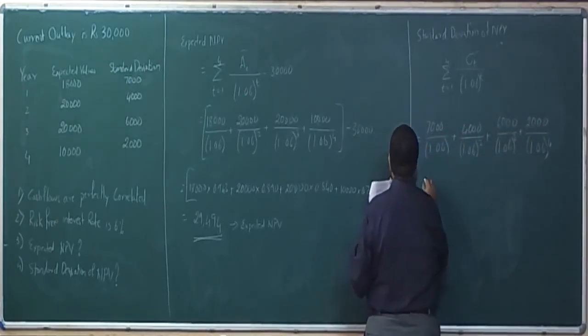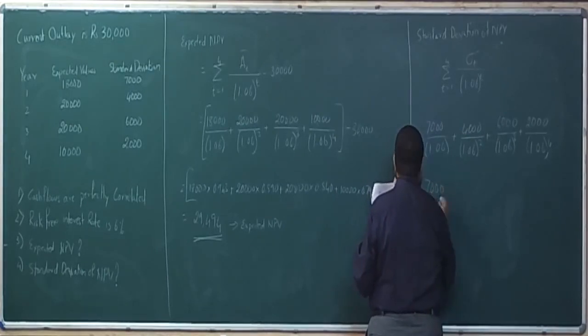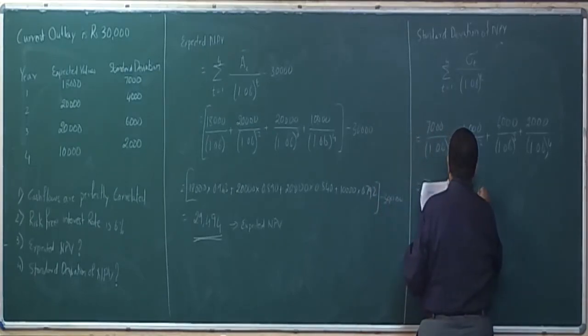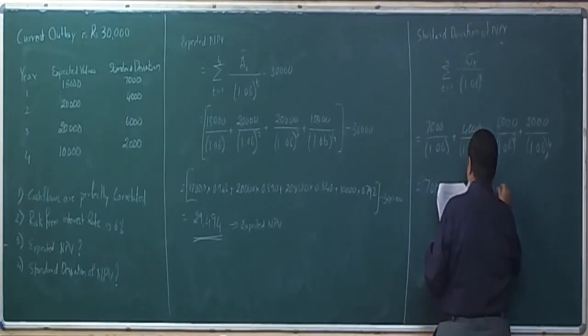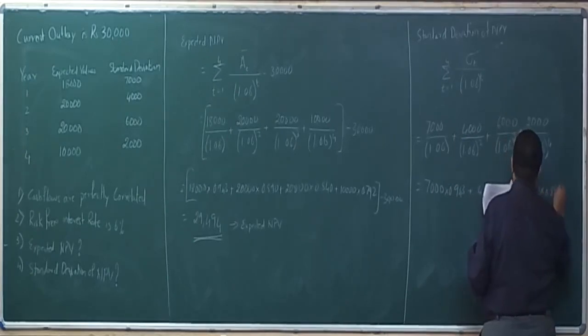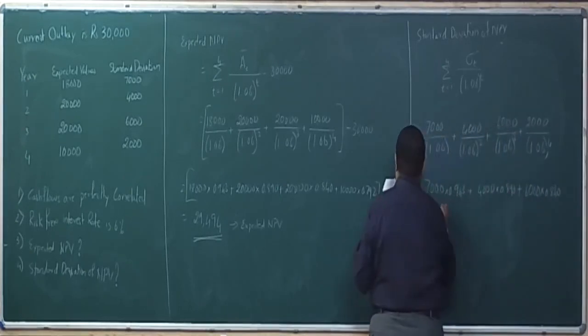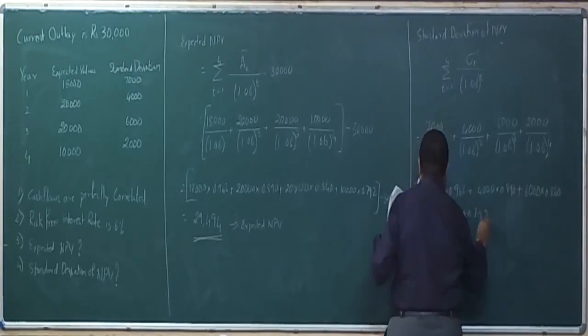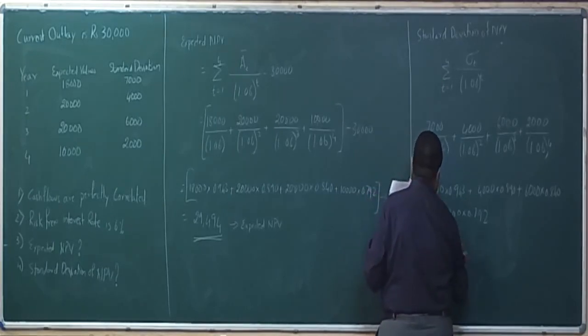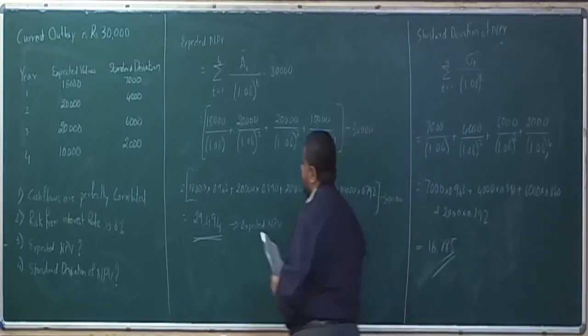This will be 7,000 into 0.943 plus 4,000 into 0.890 plus 6,000 into 0.840 plus 2,000 into 0.792. This gives us 16,785, which is the standard deviation of net present value.